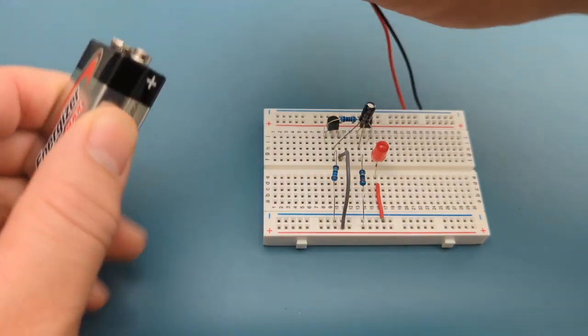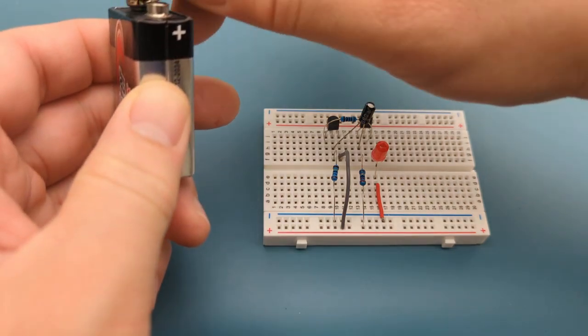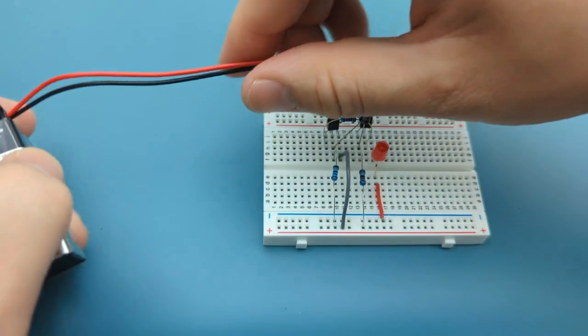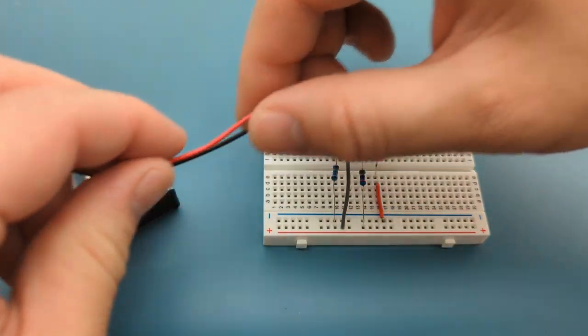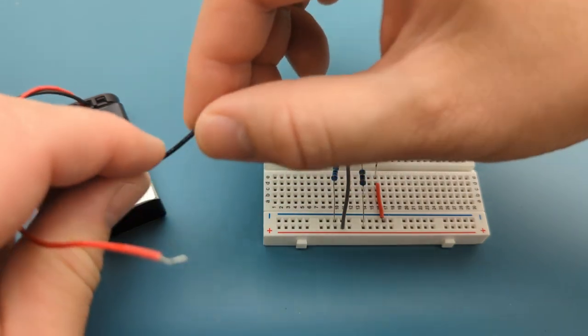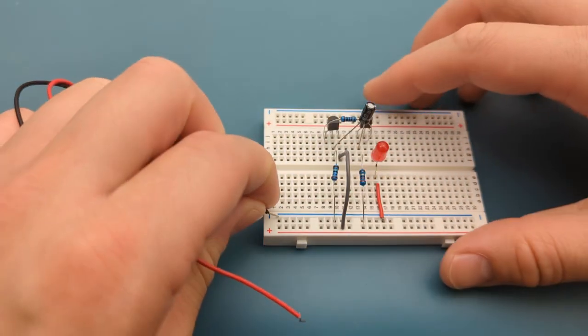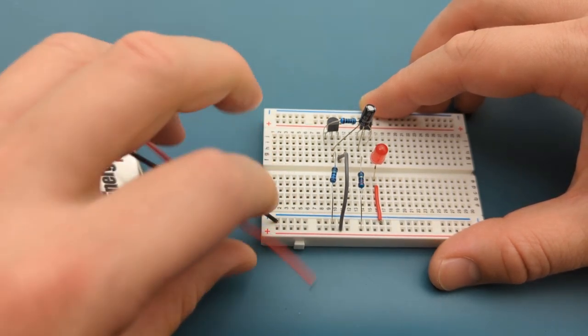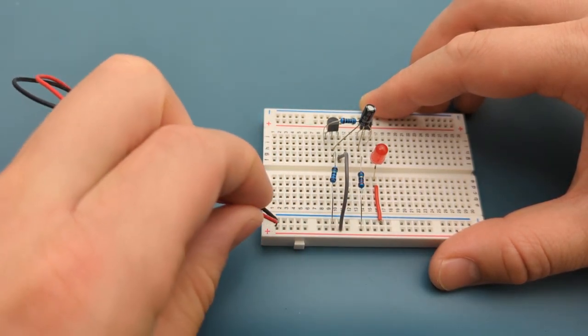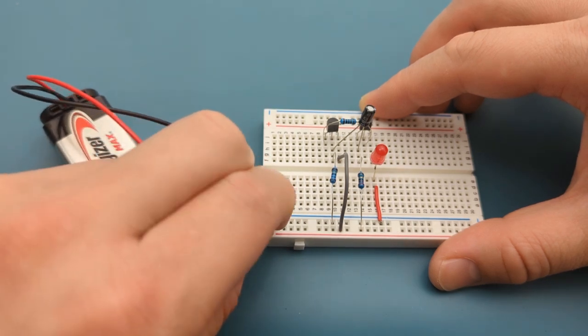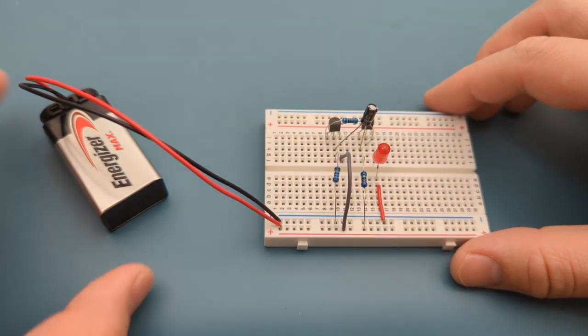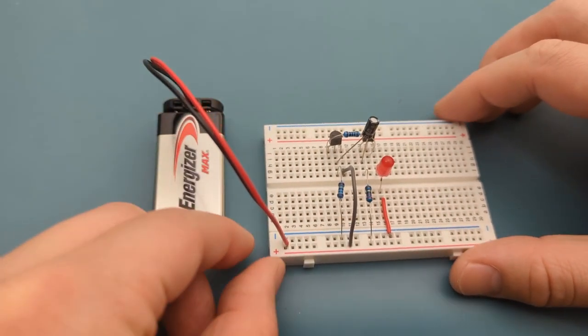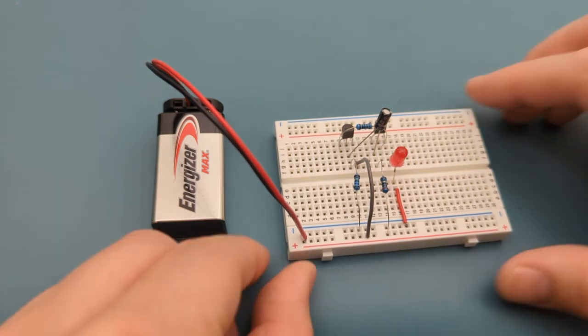Connect the buckle connector to the 9 volt battery. It's time to connect the power supply. Insert the negative lead to the negative rail. Insert the positive lead to the positive rail. We have successfully completed the circuit.